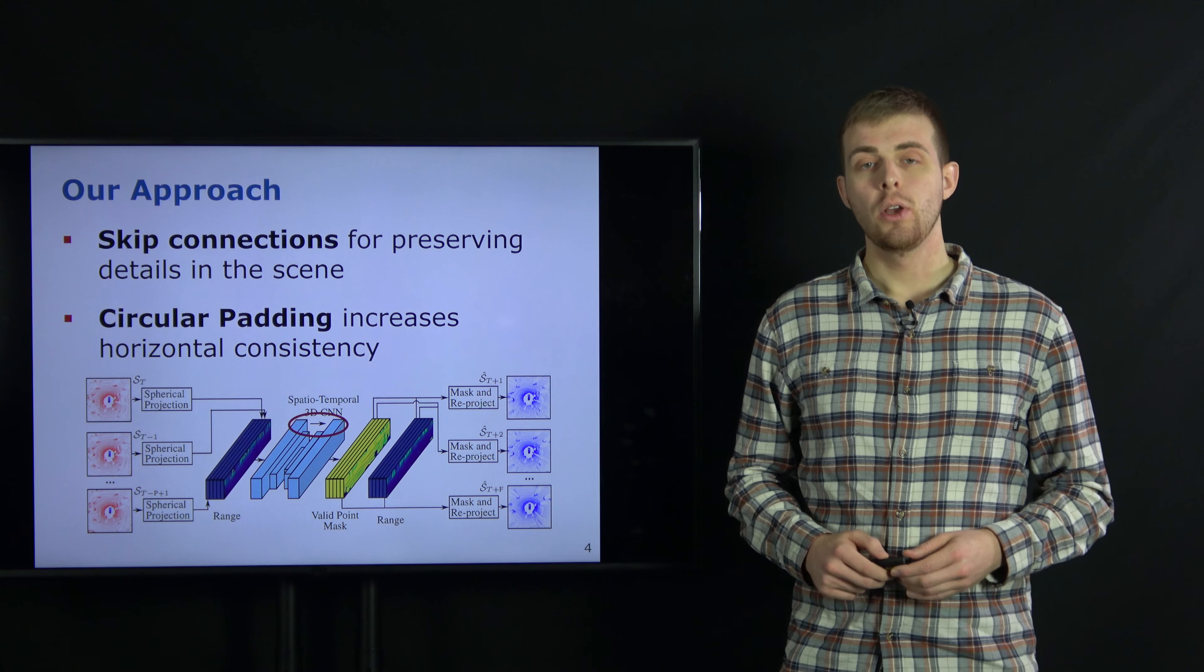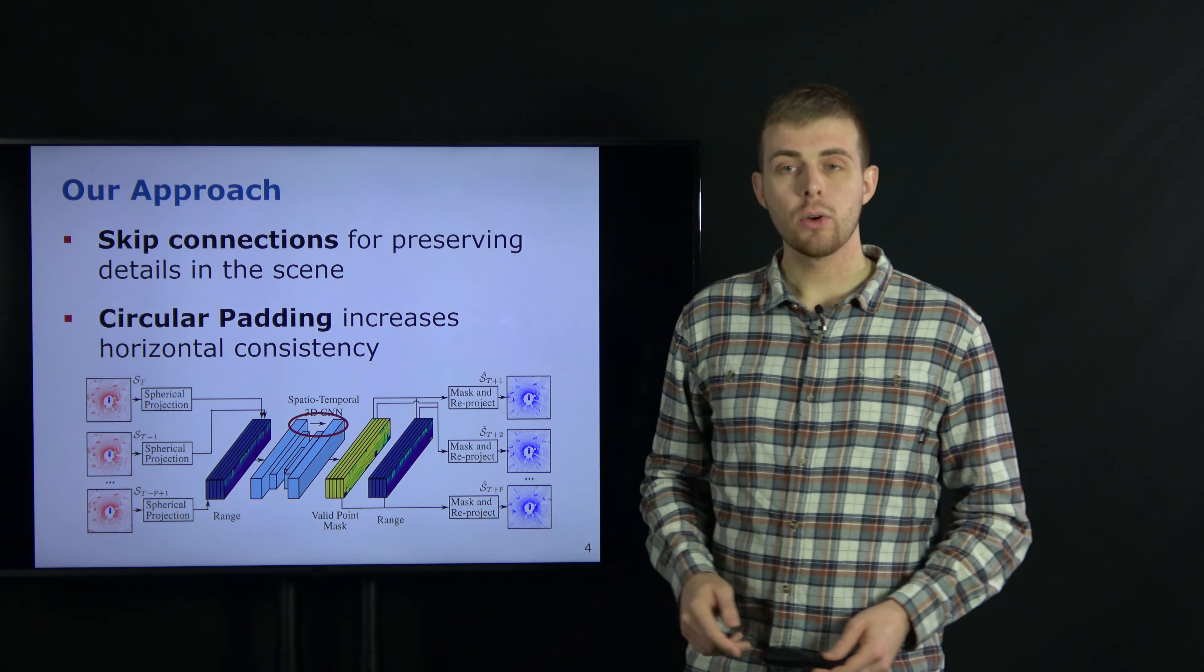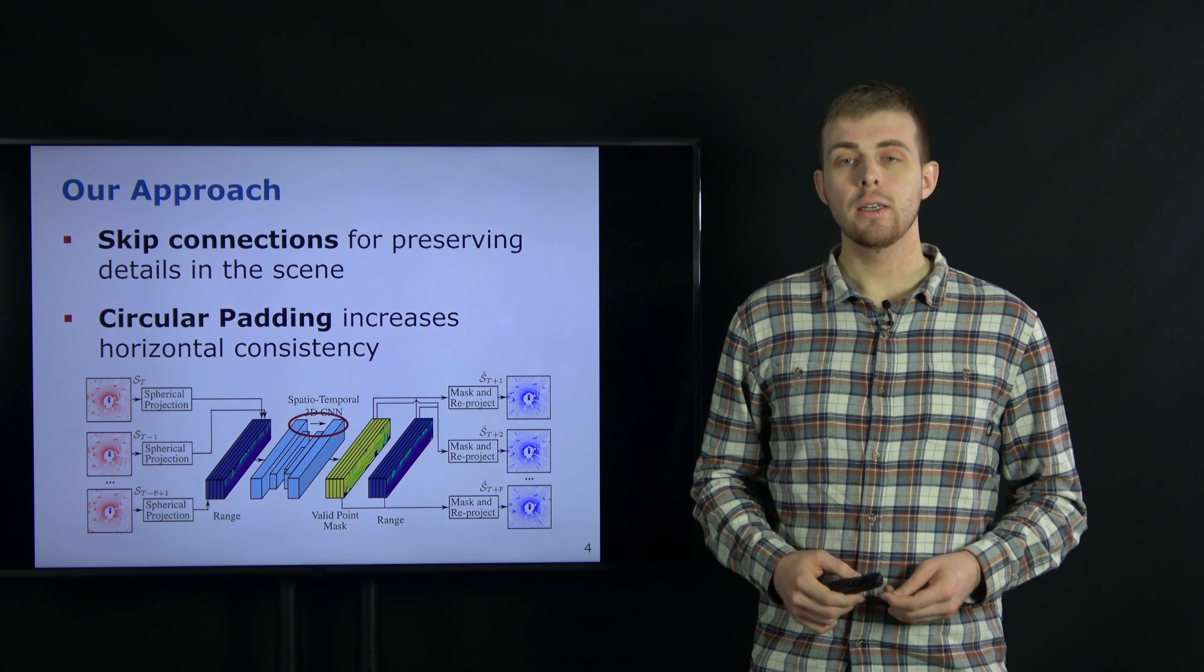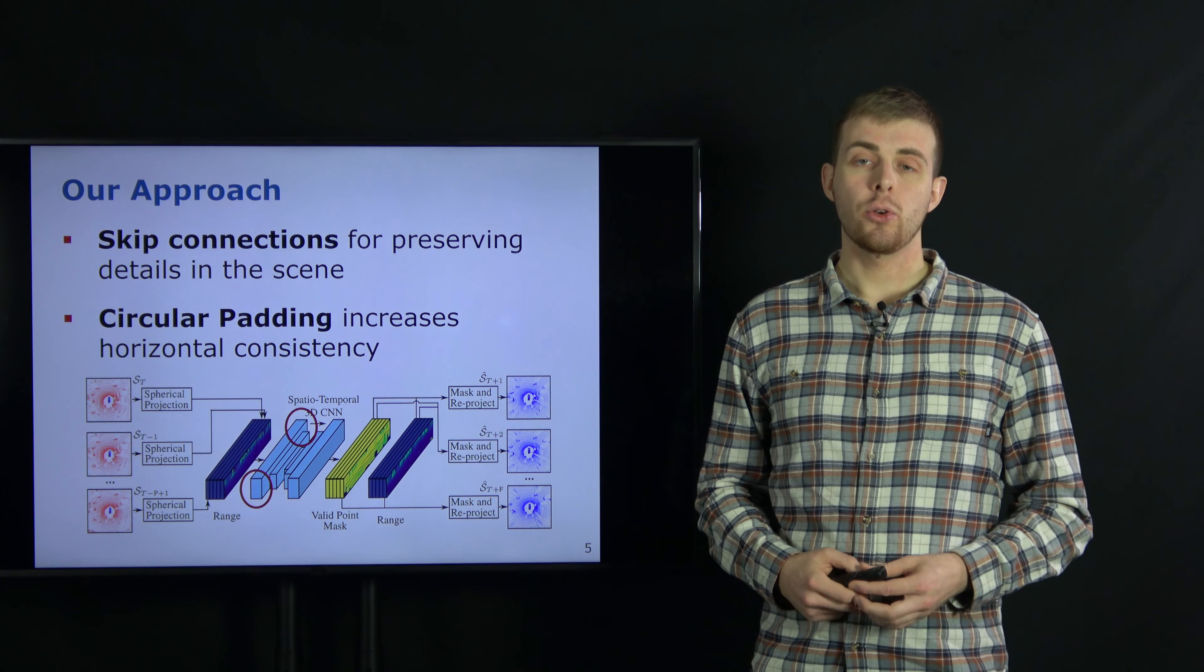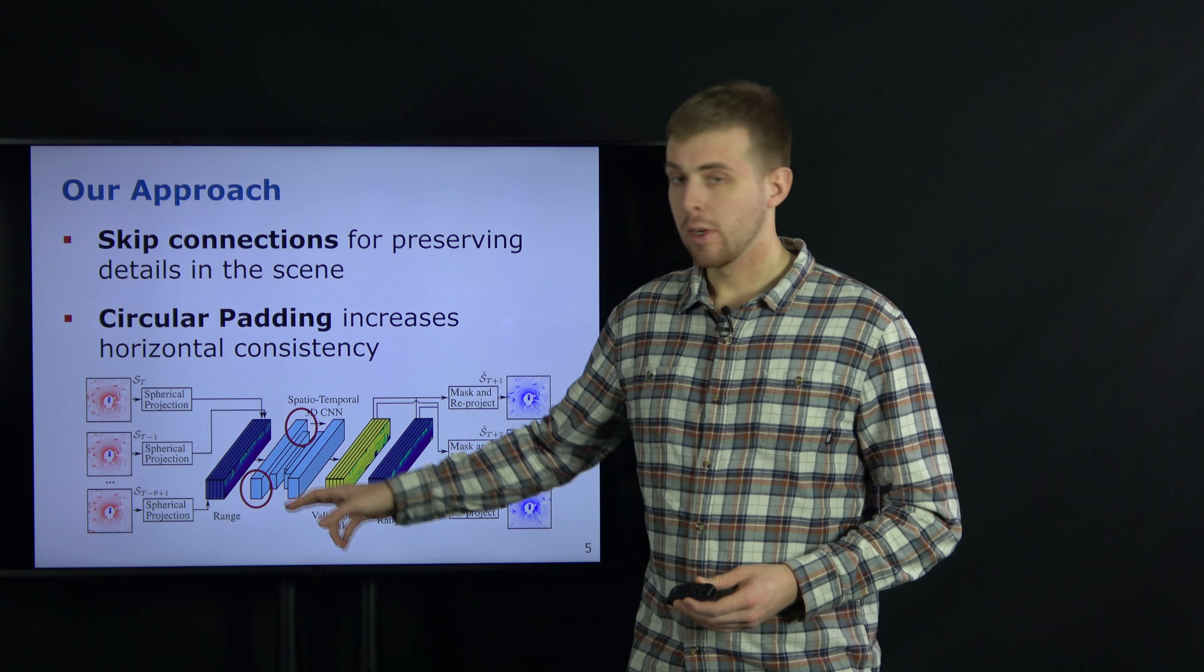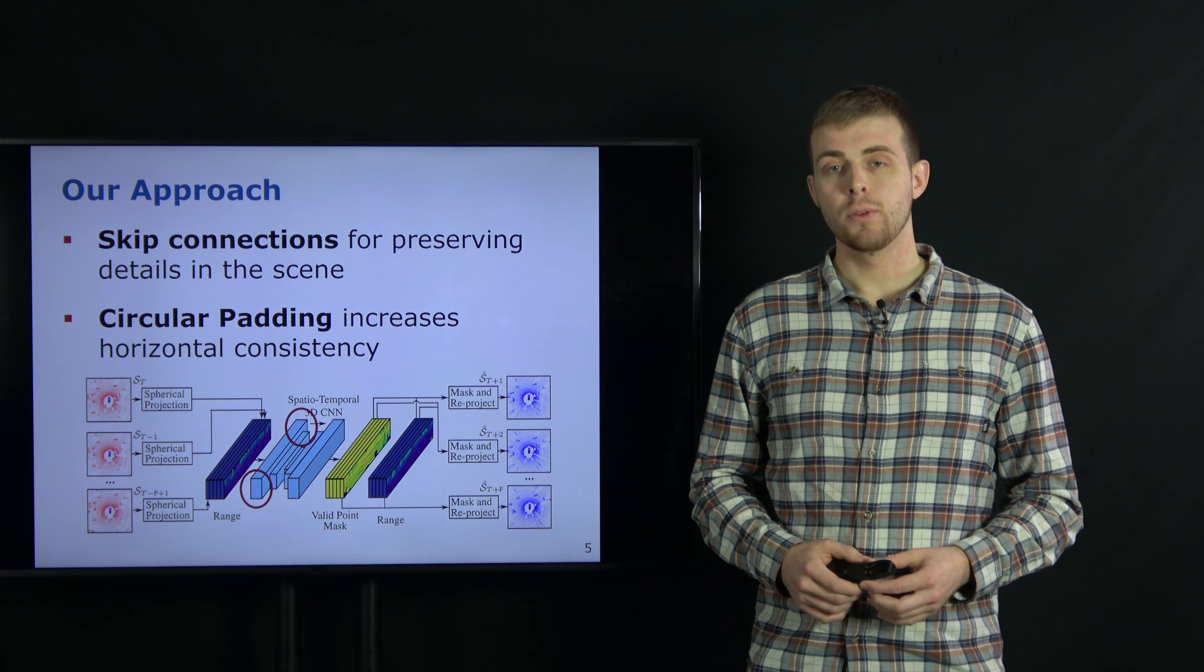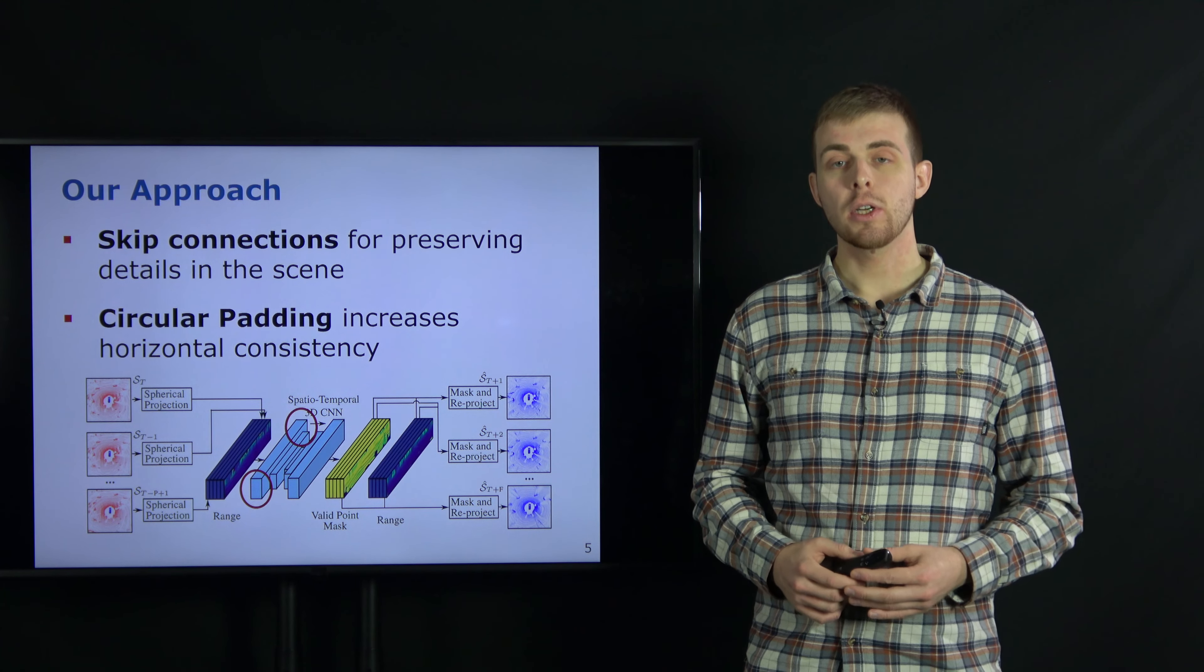The architecture needs to achieve a sufficient receptive field between encoder and decoder to predict the future motion of objects in the range image. However, downsampling in the bottleneck architecture leads to lost details and lost small objects in the predicted future scene. We therefore investigate the use of skip connections between the encoder and the decoder and experimentally show that they help maintaining details in the scene.